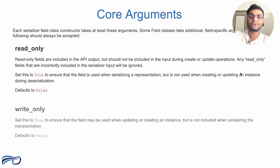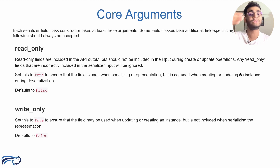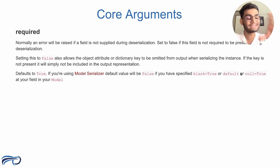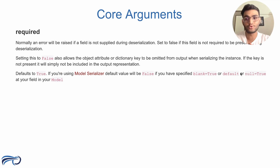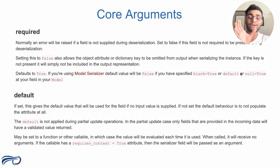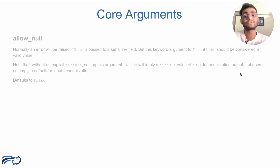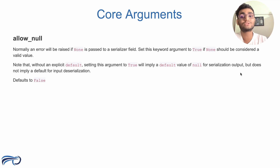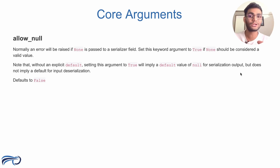The opposite of read-only is the write-only field, which is false by default and is used while creating and updating the instance but not included while representing it as output. The next one is the required field, which indicates whether the value is required or not — by default it is true. Then there is a default field, which specifies the default value for the field. There is also allow-null, which is false by default. If you set allow-null to true, you can store a null value; otherwise you will get an error.